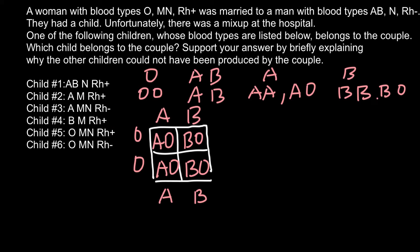Now let's analyze our answers. Child number 1 can be crossed out because it has blood group AB, and children number 5 and 6 can also be crossed out because they belong to blood group O — neither of which can appear in the progeny of this couple. Their children can only belong to blood group A or B.